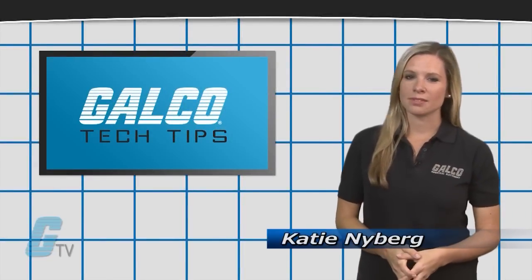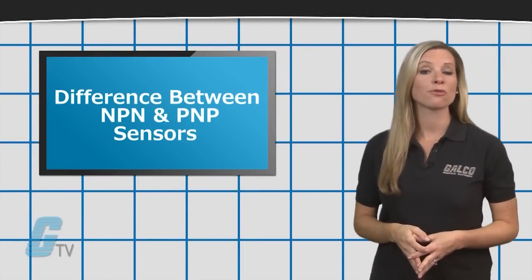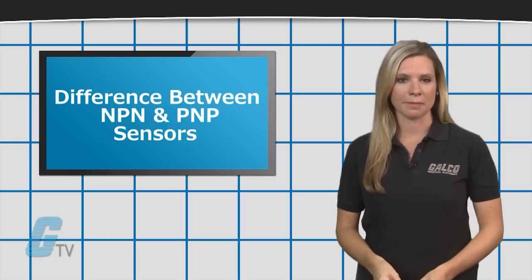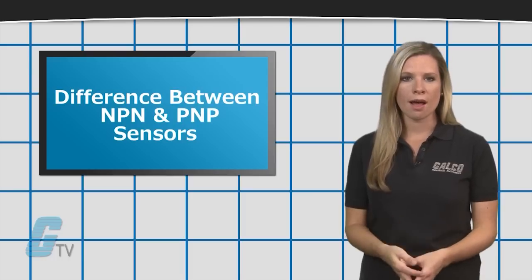Welcome to GTV Tech Tips. Many sensors with a 3-wire connection are configured for NPN or PNP. This determines how the sensor will operate when wired up.